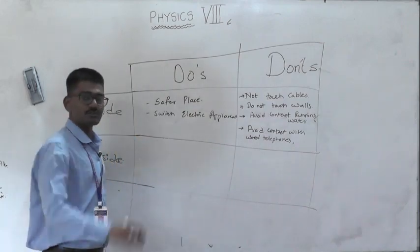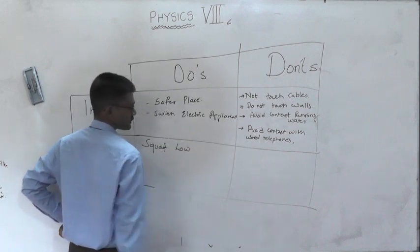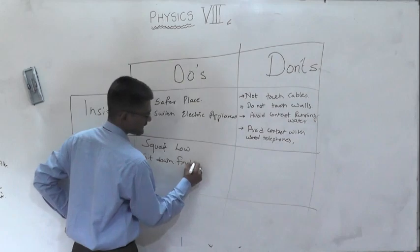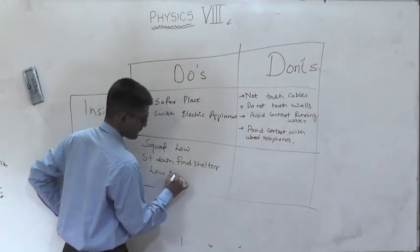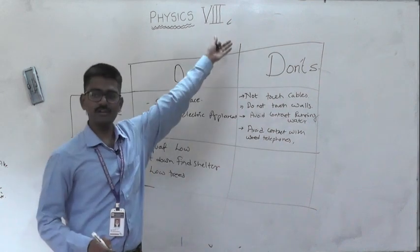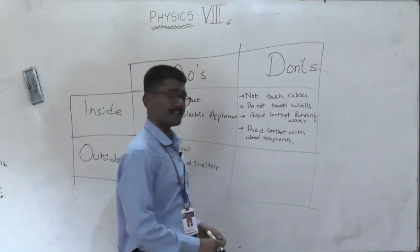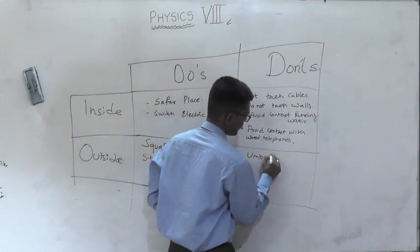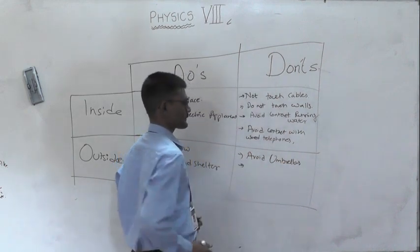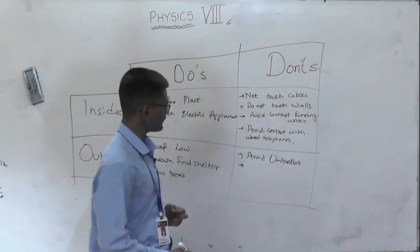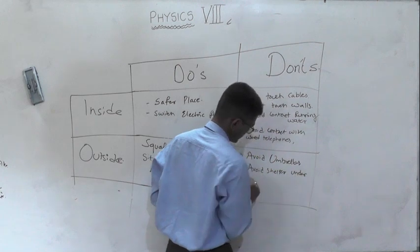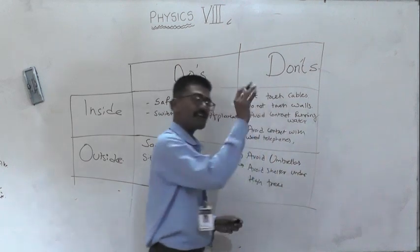Outside a building, you should squat low and sit down — that diagram is given in the textbook. Find shelter under low trees, not high trees, because high trees are easily attracted to lightning. Avoid using umbrellas. Avoid shelter under tall or high trees. You can add to this list as well.